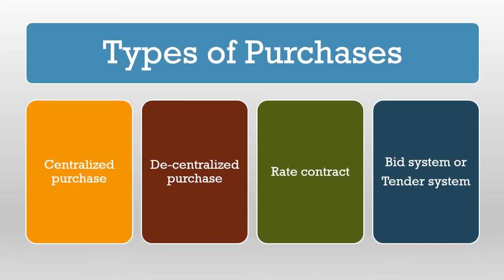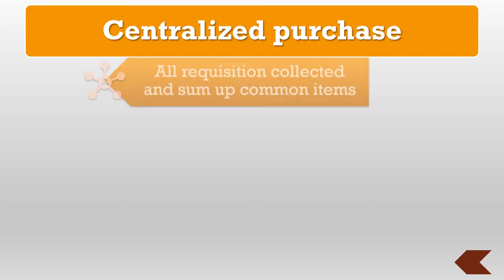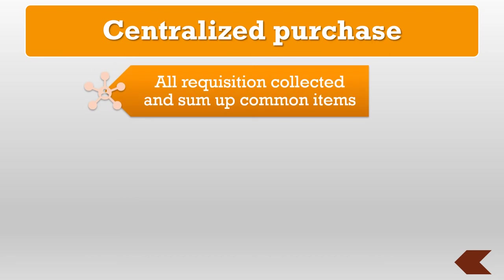Procurement can be done by various methods. The methods indicated are: centralized purchase, decentralized purchase, rate contract, and bid system or tender system. In centralized purchase, a central purchase department officer has to issue purchase orders, follow them up, institute bidding procedures, invite quotations, and maintain purchase records. All purchases are done by the purchase committee.